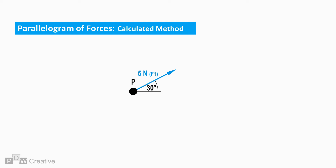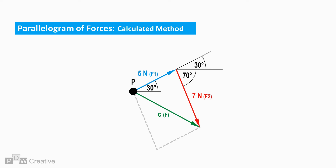The parallelogram of forces method works when both forces are offset from zero. In this second example, the first force acting on the point is 5 Newtons acting at 30 degrees, and the second is 7 Newtons acting at minus 70 degrees. The subsequent parallelogram can be drawn, with F2 offset by 30 degrees from F1. The resultant force can also be drawn.